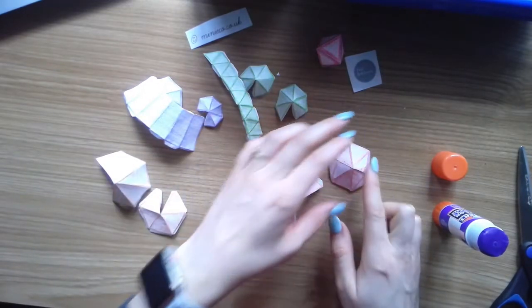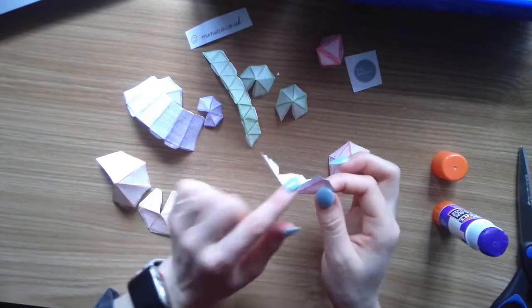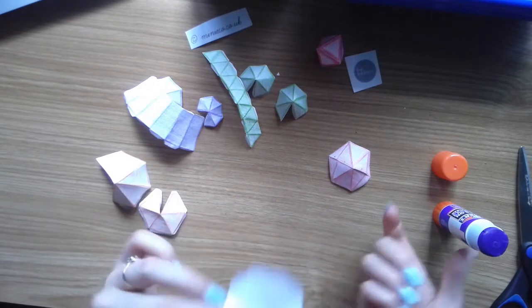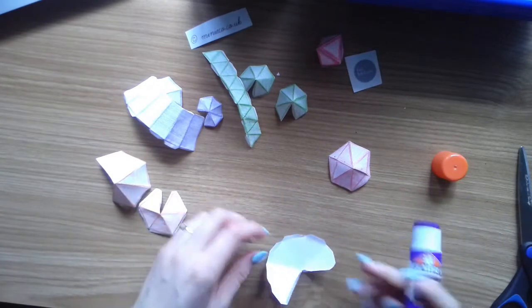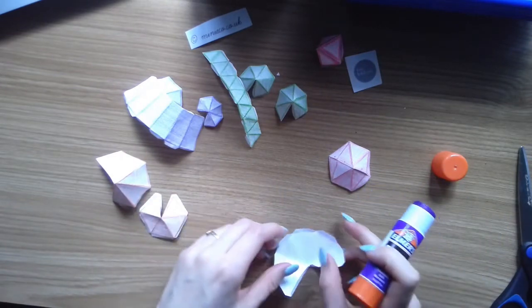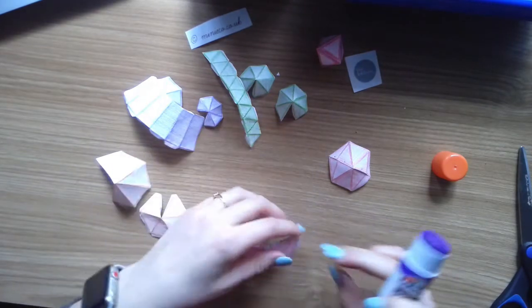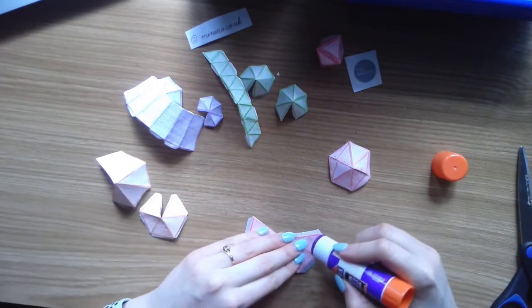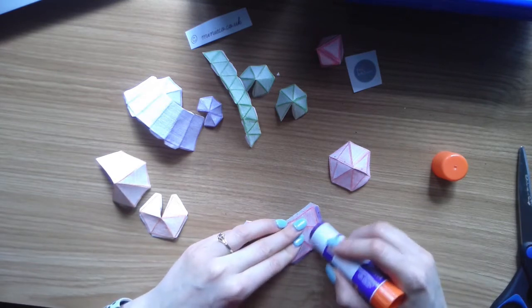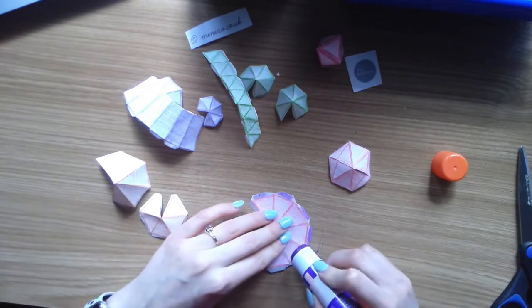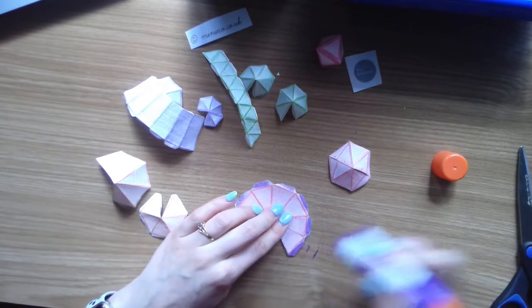And then we can work on the bottom. So the bottom, these two pieces are going to meet each other and glue. What we're going to do is I'm going to put glue on all the tabs, making sure to add a lot.